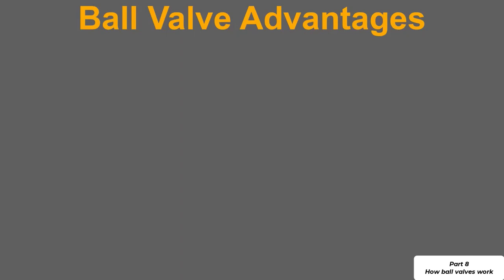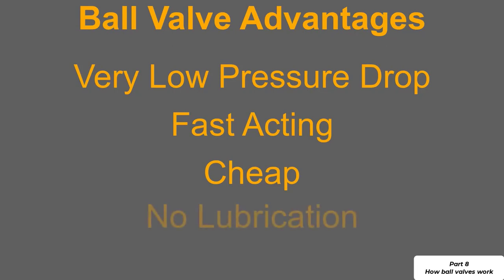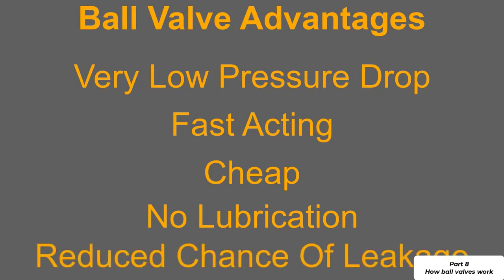The ball valve itself because it can open up to allow complete flow through the valve has a very low pressure drop. That means the flow is almost unrestricted through the valve. That is one big advantage. Another advantage is that the valve can be actuated very quickly, it only requires a quarter of a turn. The ball valve itself is relatively cheap and has low maintenance costs. It requires no lubrication and one of the final advantages is that the ball seals very well against the seat and this reduces the likelihood of leakage.